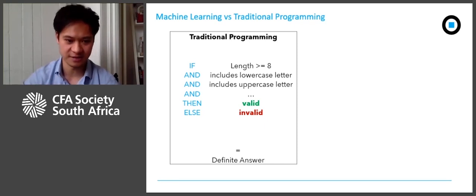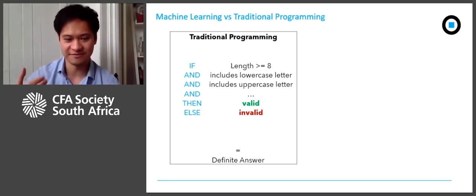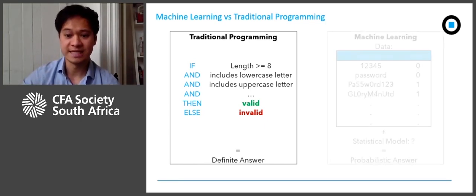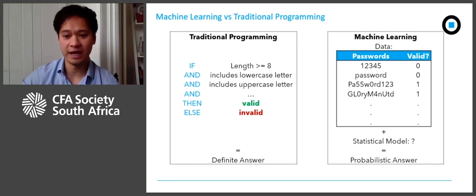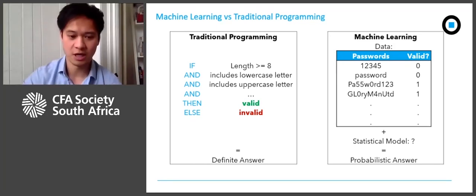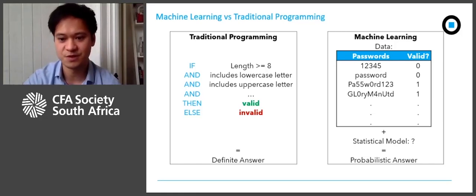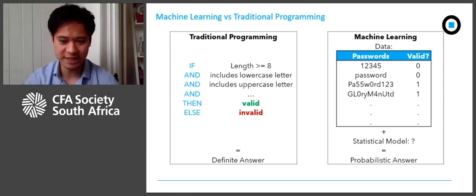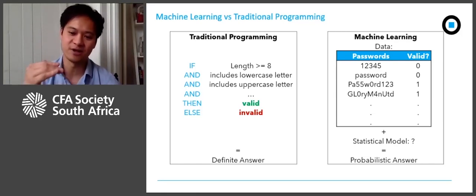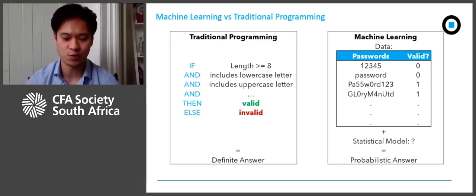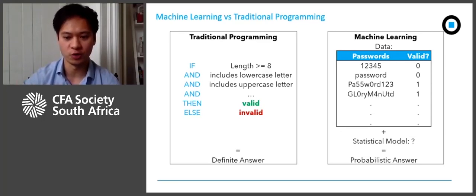If the password fulfills these criteria then it's valid, or else it's invalid. You're getting a definite answer — is it valid or not? Instead of a list of preset rules, machine learning uses data to determine the rules. In this illustration, we have labeled data: examples of passwords and whether they're valid or not.